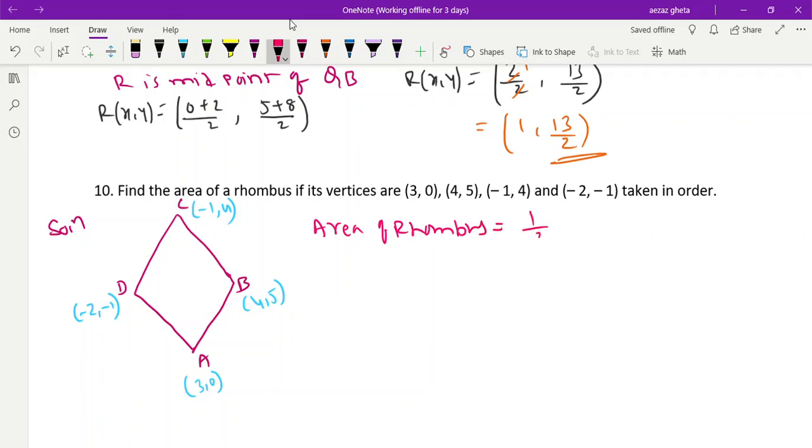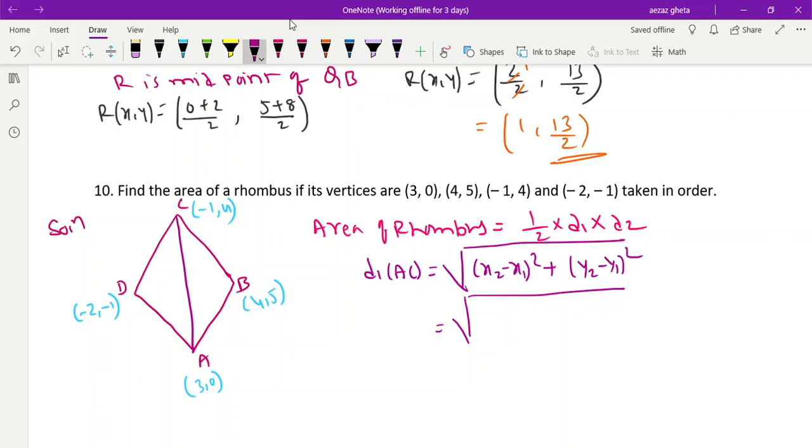Area of rhombus, we have a formula: area of rhombus is equal to half into diagonal 1 into diagonal 2. d₁ into d₂ is nothing but diagonal 1 into diagonal 2. So think, AC is the first diagonal, so d₁ is nothing but AC. And if you want to find out the distance, you will use √[(x₂ - x₁)² + (y₂ - y₁)²].